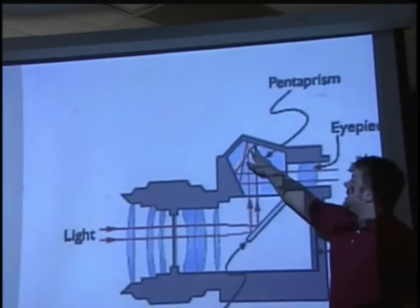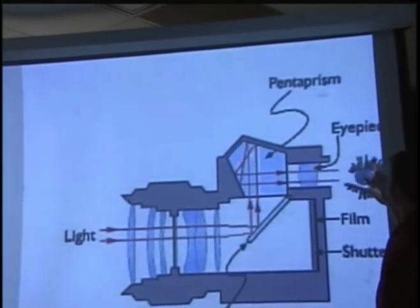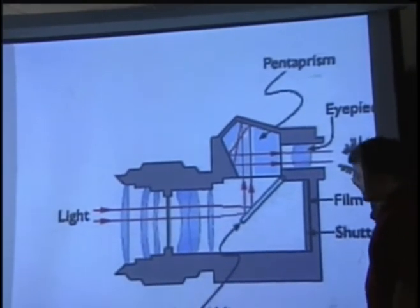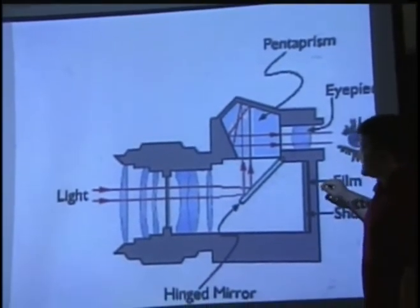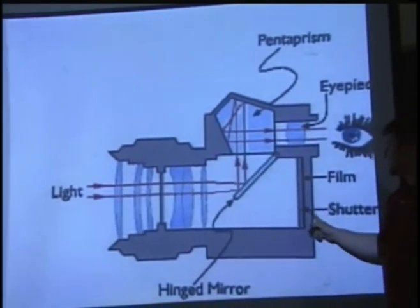Here we have the light going in, reflecting once, twice in the prism, and coming out through the eyepiece and into your eyes so you can see what you're taking a picture of. Now when the shutter button is actually pressed, the hinged mirror swings up, the shutter raises, and the film is allowed to be exposed.